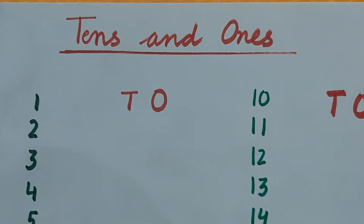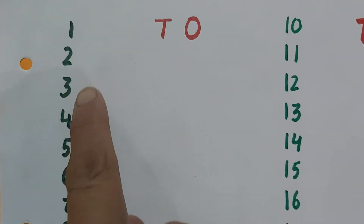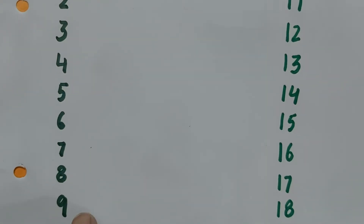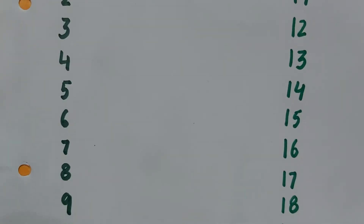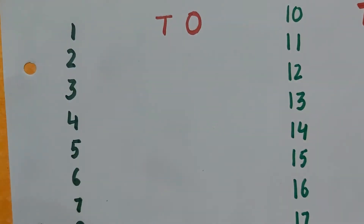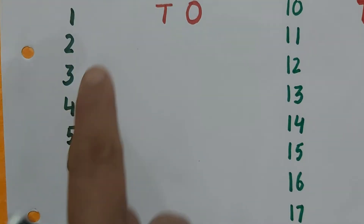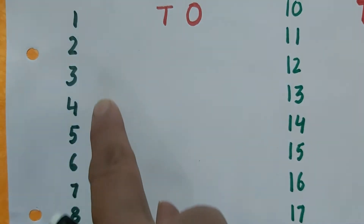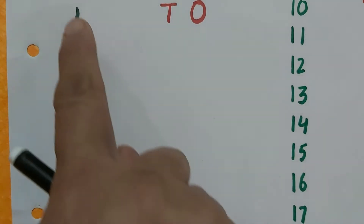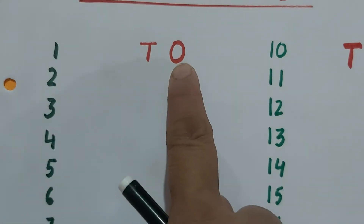Now, what I am going to explain you: these are the numbers 1, 2, 3, 4, 5, 6, 7, 8, 9. Numbers 1 to 9 are single digit numbers. They are single digit — there is only one number, not two numbers. So 1 to 9 single digit numbers are written under ones.